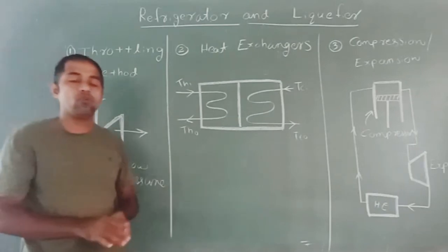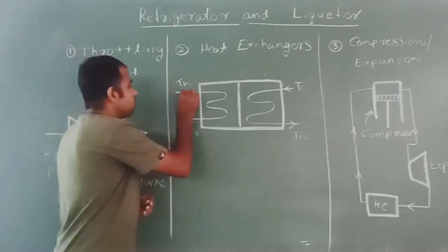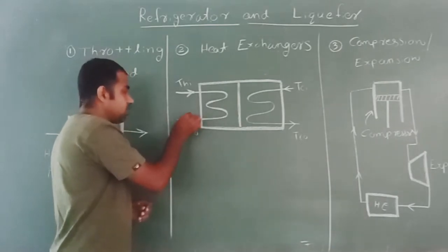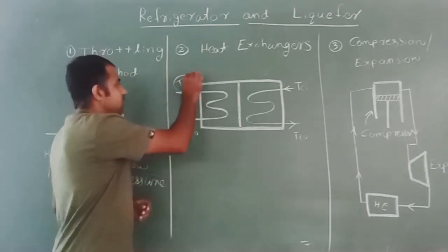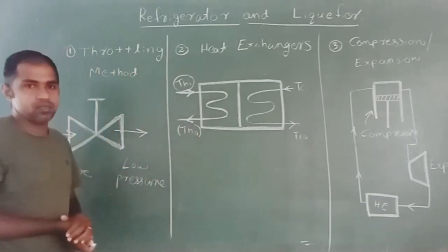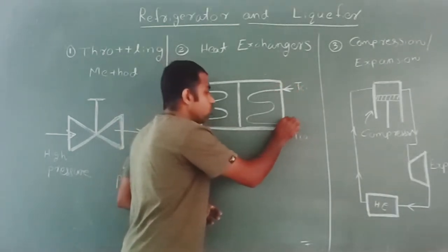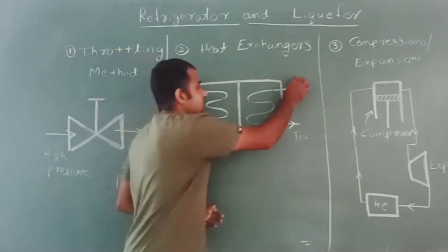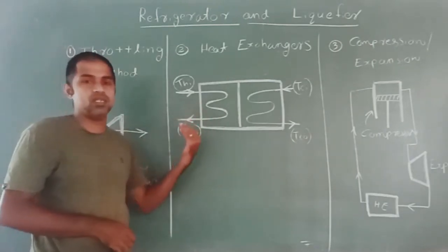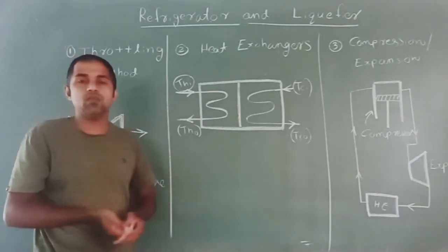The next method normally used for decreasing the temperature of any fluid is known as heat exchangers. The hot fluid is entering into this region and leaving from the heat exchanger through the other opening. THI means temperature of the hot fluid entering into the device, and THO means temperature of the hot fluid leaving from the device. There is also a region where cold fluid is entering, with corresponding temperatures TCI and TCO. What is happening is that there is an exchange of heat energy from the high temperature region to the low temperature region. That is the basic principle behind decreasing the temperature of a hot fluid, and this is one of the methods adopted in many industries.